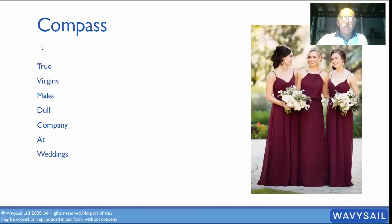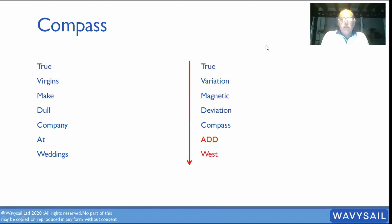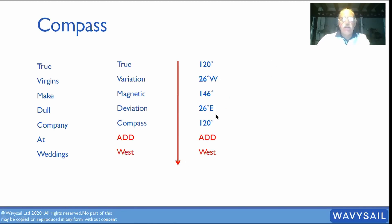If you want to remember a nice acronym: True Virgins Make Dull Company At Weddings. So we've got True — our chart. Then Variation gives us Magnetic. Then Deviation gives us Compass. And then we add West. If you're reading from true to magnetic or magnetic to compass, you add west variation or deviation, which means you subtract east.